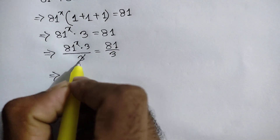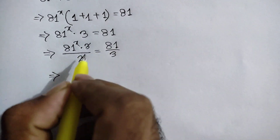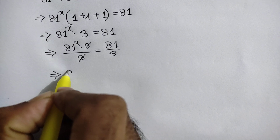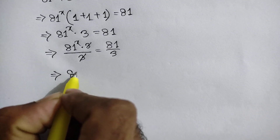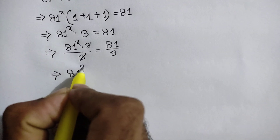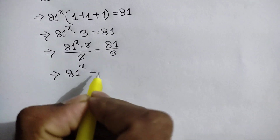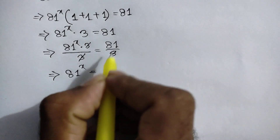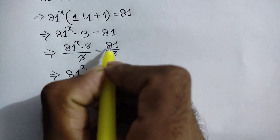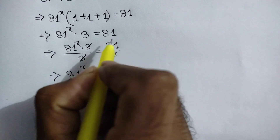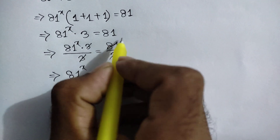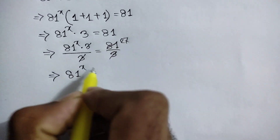The 3 cancels out on the left side, so 81 to the power x is equal to 27.